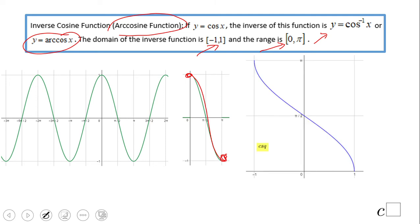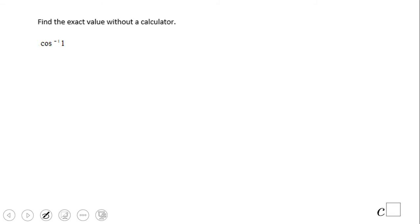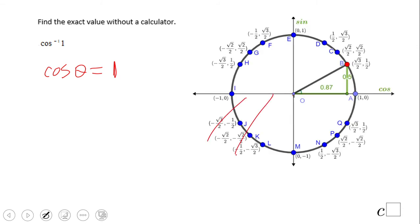The same idea: we restrict the domain just between zero and pi and now we can see the inverse function. Let's see a problem: I'm looking to find the arc cosine of one. Cosine of what angle is one? I'm going to bring the unit circle and now in the unit circle I'm going to remove the bottom, I'm going to look only to the top of the unit circle. Where is the cosine one? Cosine is the x-axis, right here at zero. So theta is zero degrees or zero radians, either way is good.